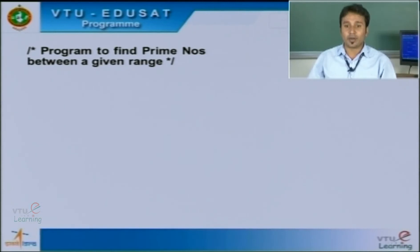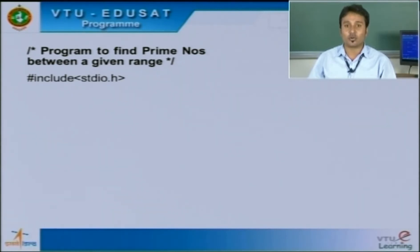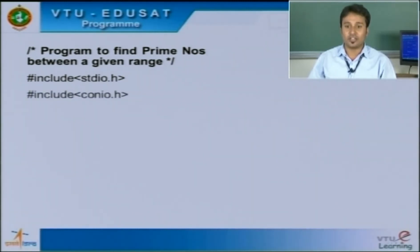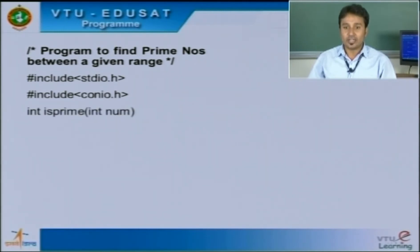Let us look into the program. This is a program to find prime numbers between a given range. The first line is #include stdio.h, which is the preprocessor directive along with the standard input/output header file. The next line is also a header file involving the console input/output header file. Next is the user-defined function isPrime(n).